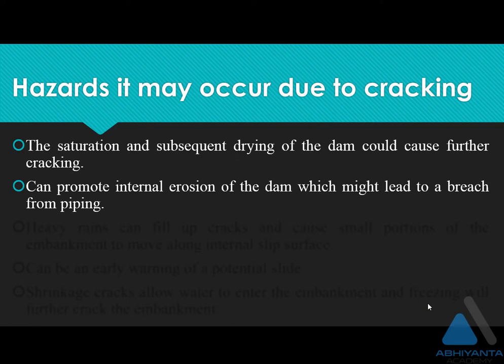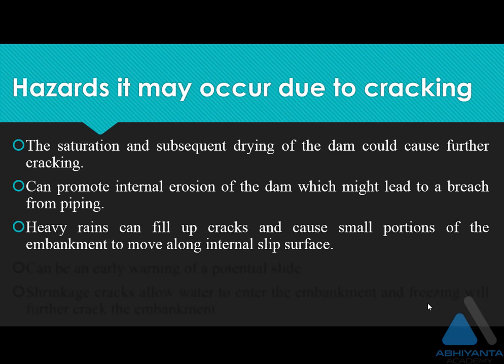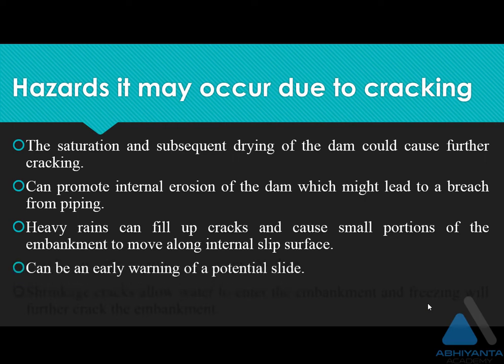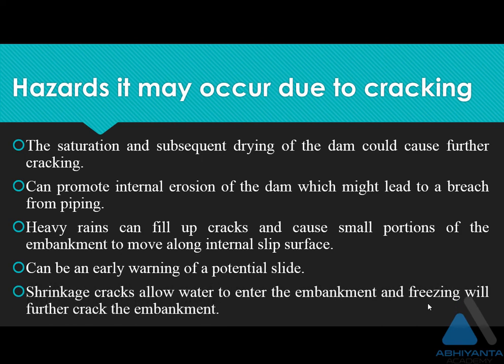Internal erosion can lead to piping. Heavy rains can fill up the crack and cause a small portion of the embankment to move along the internal slip surface. It can be an early warning of a potential slide — we can identify that a crack is a sign of potential slide and we can prevent it. Shrinkage cracks allow water to enter the embankment, and freezing will further crack the embankment.